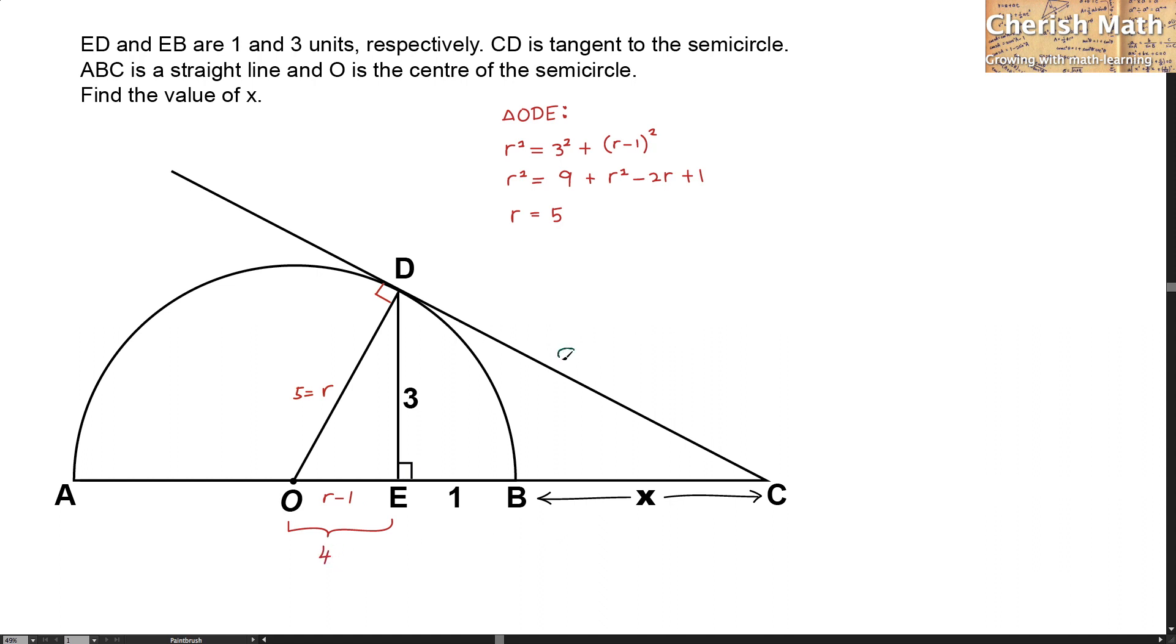Let me label the length of DC to be A. Now I'm going to use the same Pythagoras' theorem to solve the triangle ODC. This is how it turns out by using the theorem. By expanding it, I'm going to make A squared the subject.